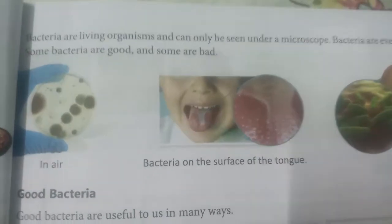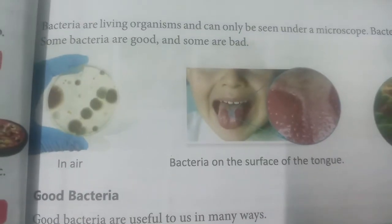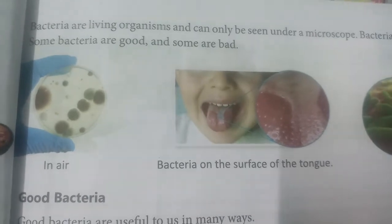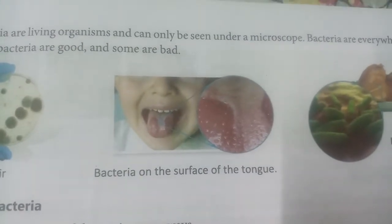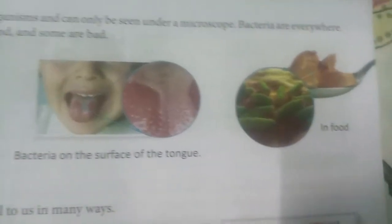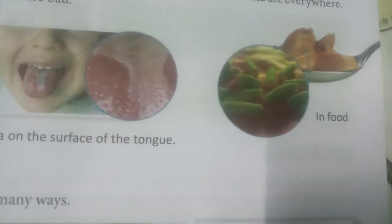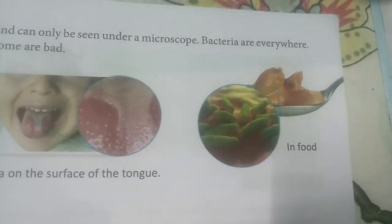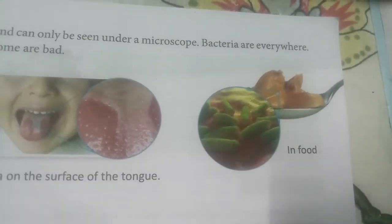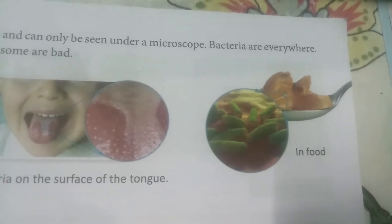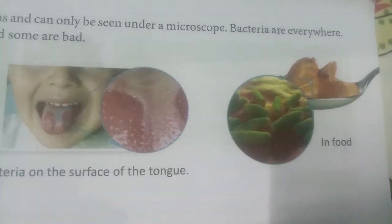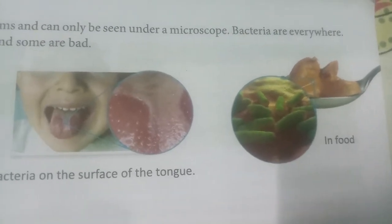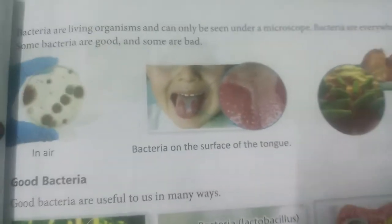As you can see, bacteria are present in the air. Bacteria are also on the surface of our tongue, and in food — when food becomes rotten, bacteria are present. Bacteria cannot be seen by our eyes, but here in this picture taken by a microscope, bacteria are shown. So you understand what I am saying.